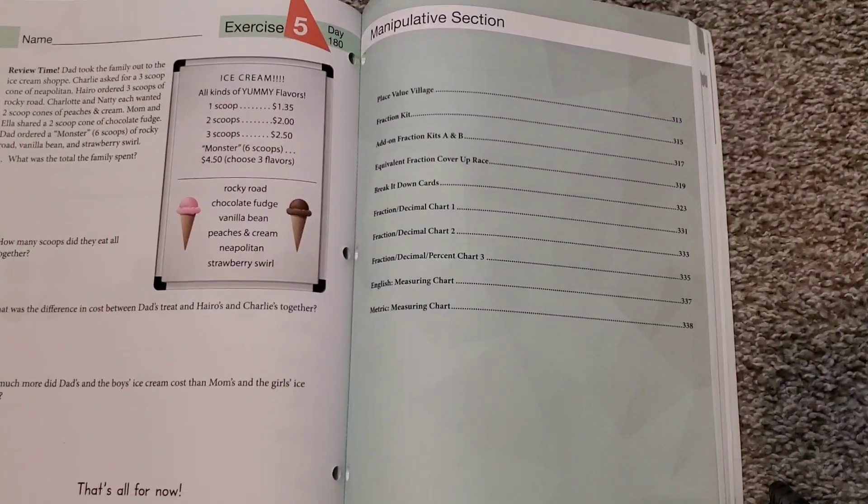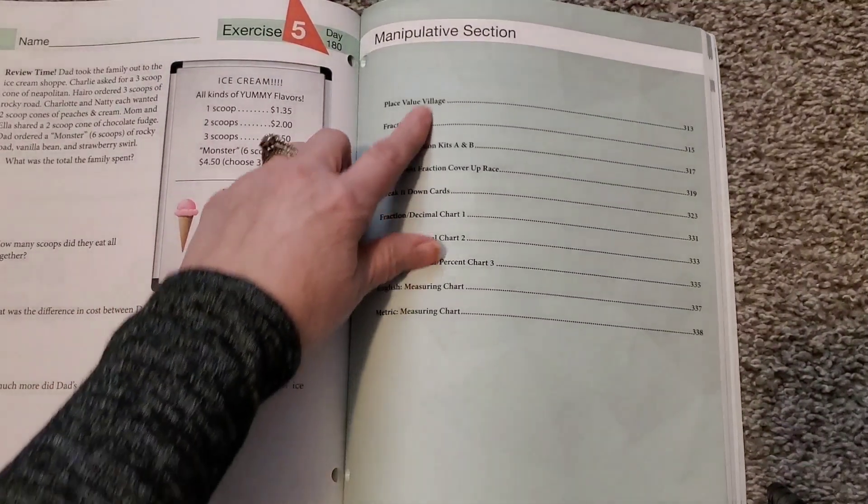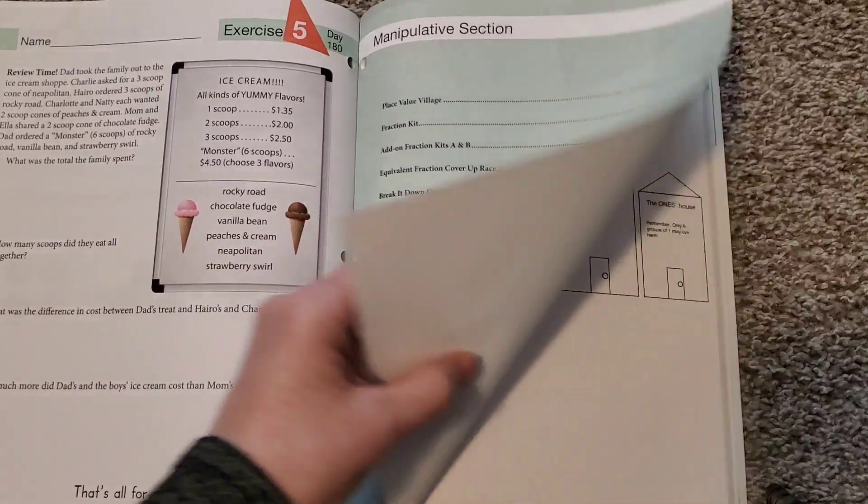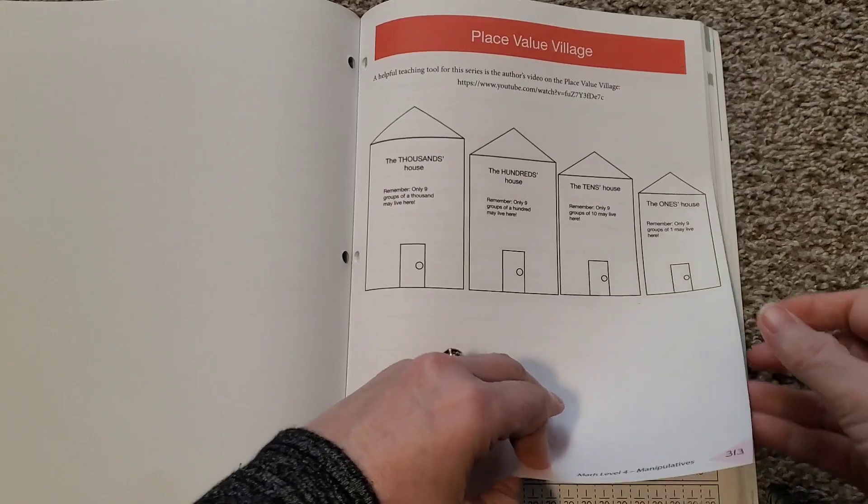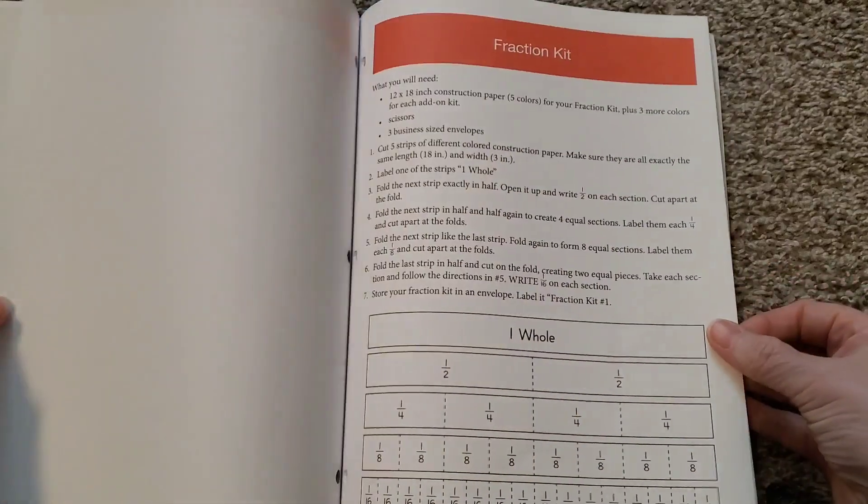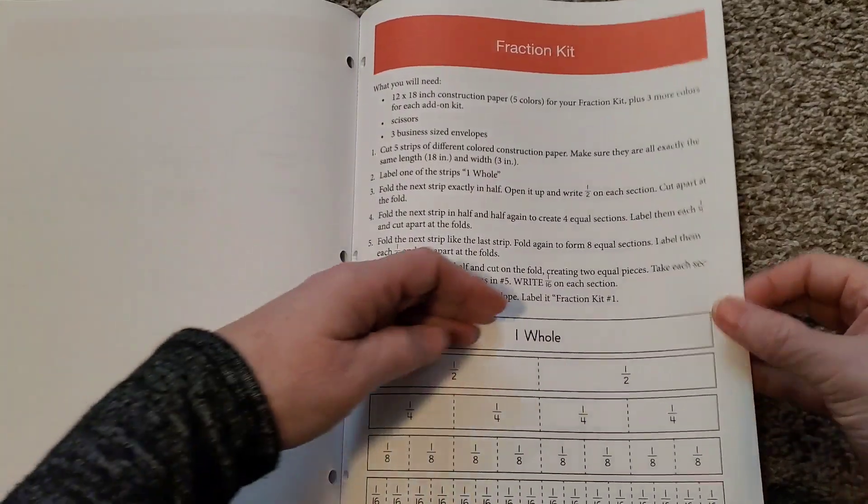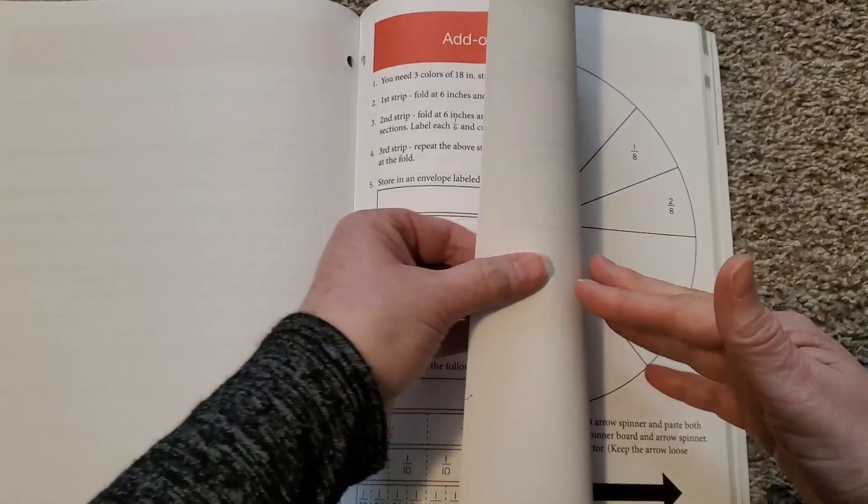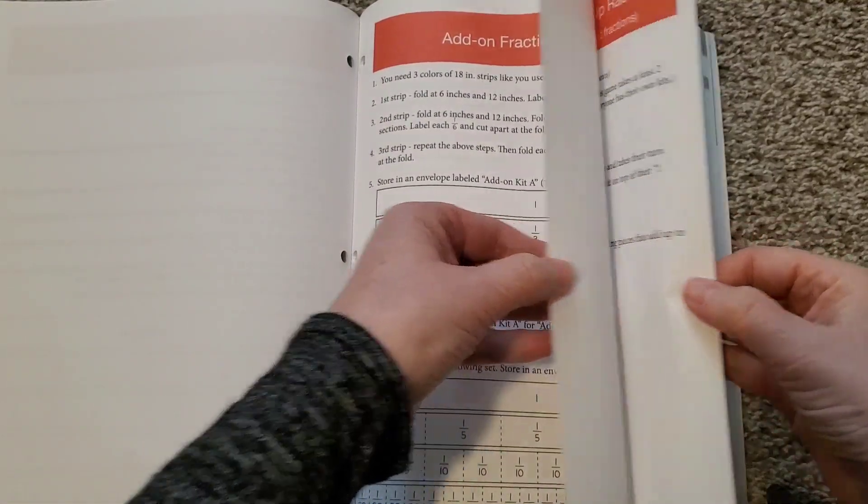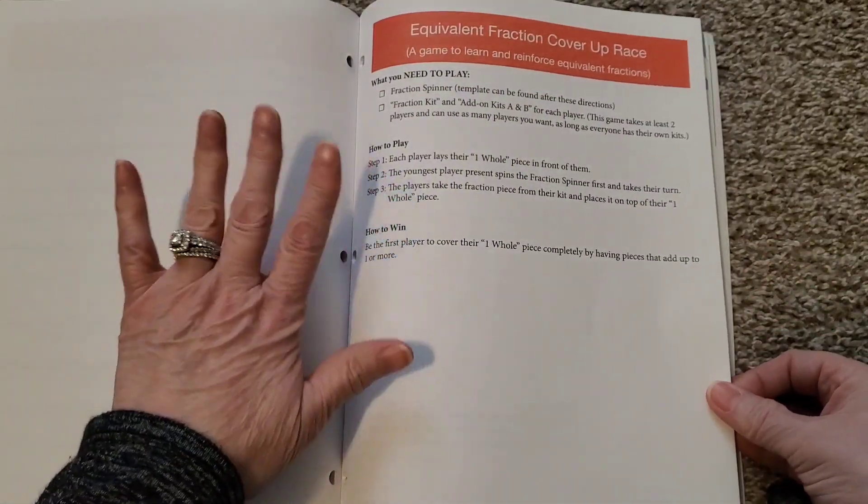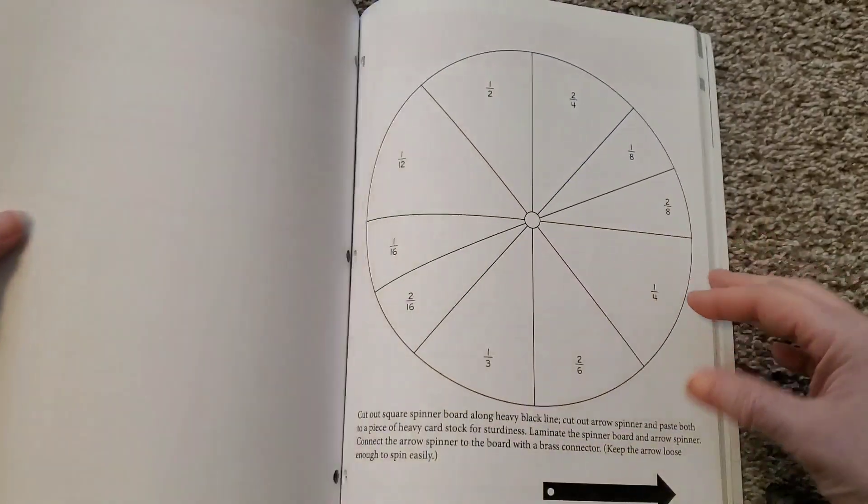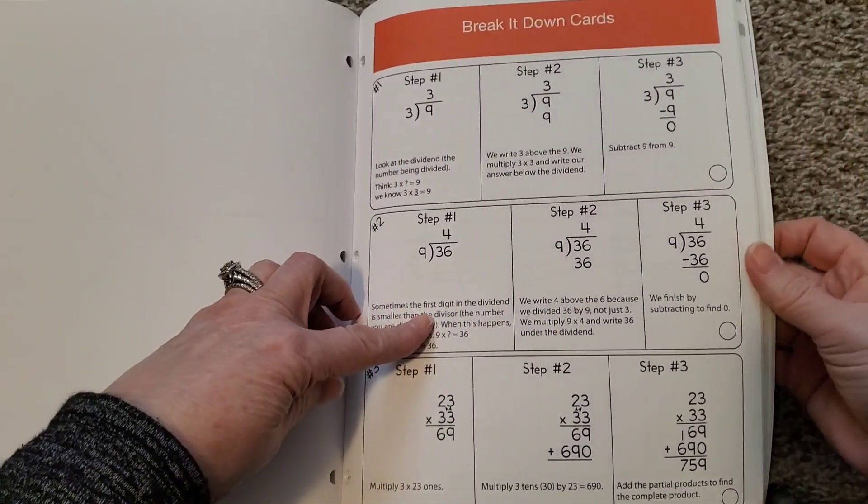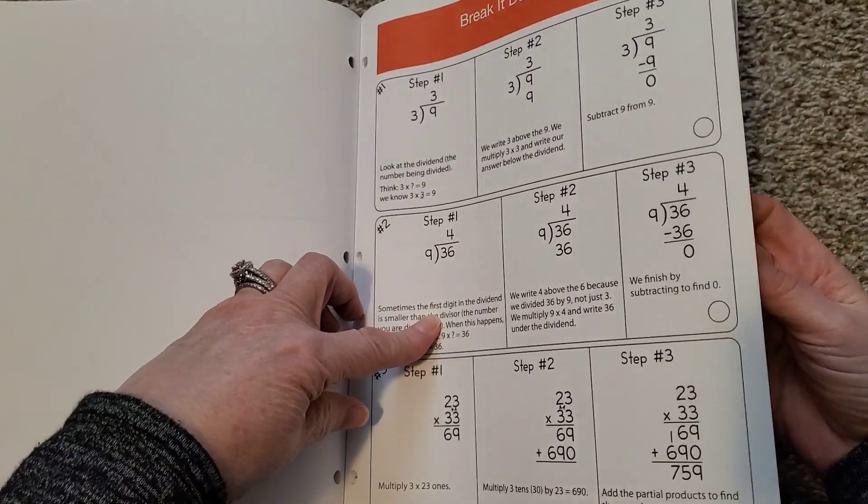So, I went ahead and I skipped to the back of the book. And you'll see there's a whole manipulative section of the book with all of the manipulatives. There's the place value village, the fraction kit, an add-on fraction kit. As you can see, we don't use any of this. I'm so bad, but we don't use any of it. But, you can see, there's all kinds of good stuff in here. Break it down, cards, and how to do your division problems.